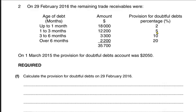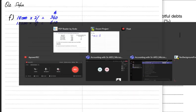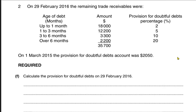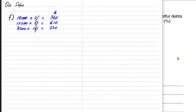As the time is passing and the customer is getting later in their payments, the doubt keeps increasing. We apply 3,300 times 10%, and lastly 2,200 with 20% applied on that. If we add up all of these, we are left with a total provision of 1,740.